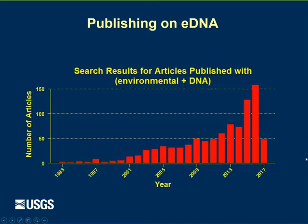Here's a publication timeline for research articles published each year from 1993 to the present. You can see there's a very strong growing trend — eDNA is being researched more and more. Last year there were 158 environmental DNA articles published, and in 2017, it's only April and we're already well on our way to following that trend.